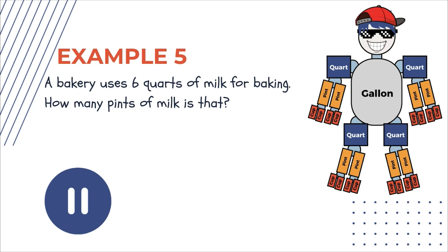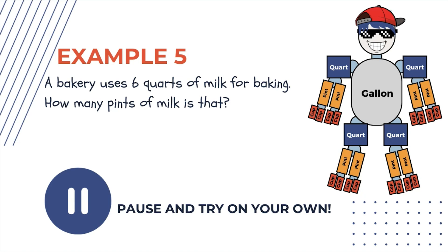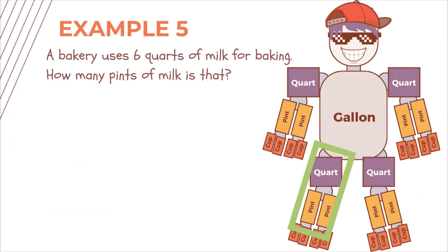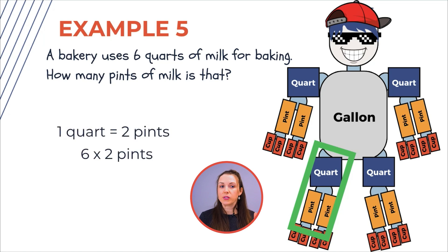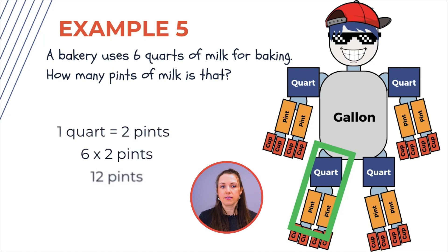Pause the video and try this one on your own. A bakery uses six quarts of milk for baking — how many pints of milk is that? Let's do this together: one quart is two pints, so six quarts times two pints gives us 12 pints of milk.